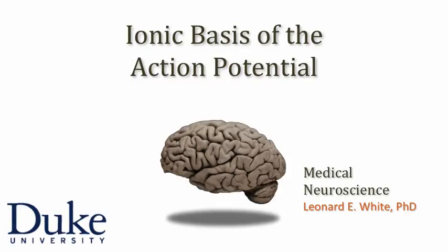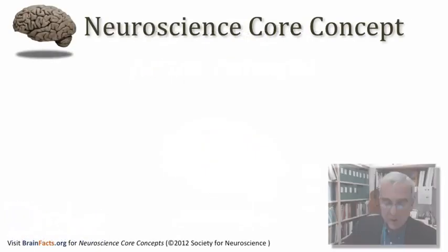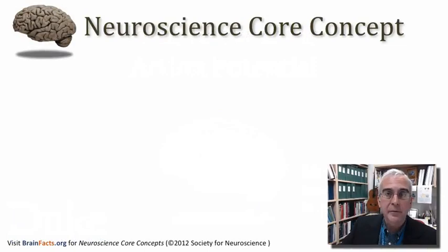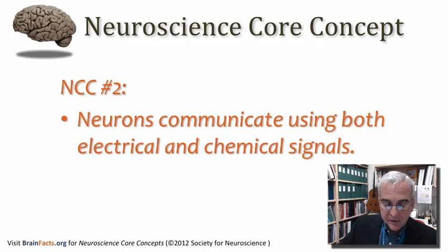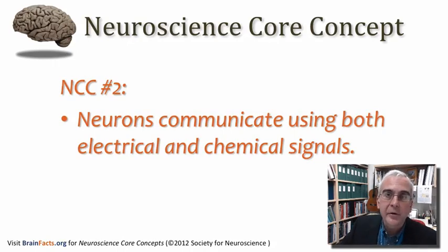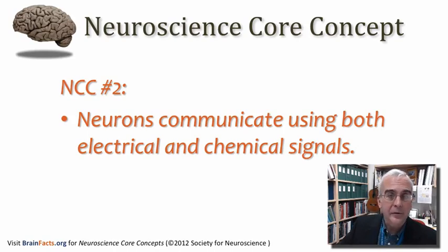Hi, everyone. Welcome to this tutorial on the ionic basis of the action potential. What we're going to talk about today relates once again to one of our core concepts in the field of neuroscience, and that is that neurons communicate using both electrical and chemical signals. So today we're going to talk about one of the most important mechanisms within the nervous system for communicating with electrical signals.